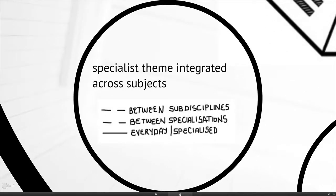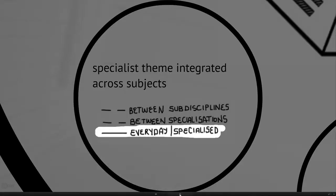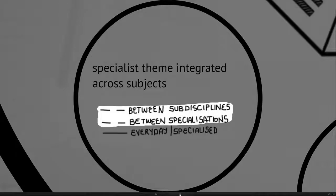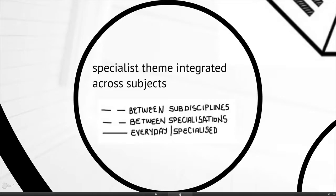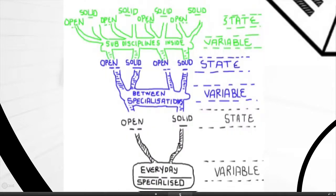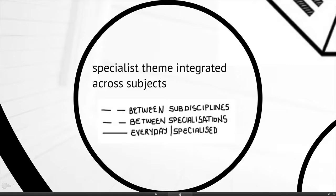This particular combination is a situation where you make the everyday-specialized line very solid — so you ensure what you're doing is actually specialized school work — but then you land up integrating after that. You take a specialist theme, a theme which is specifically a school theme rather than an everyday theme, but then pursue it across specializations and between sub-disciplines. For example, with younger kids you might do something like volcanoes: you make sure you do the science of volcanoes, the art of volcanoes, and the poetry of volcanoes.